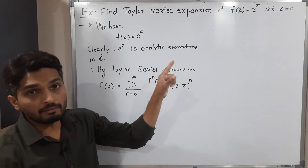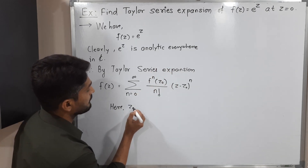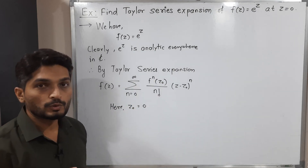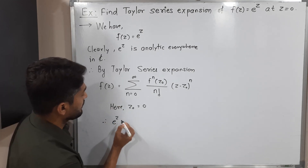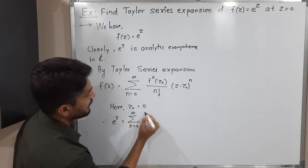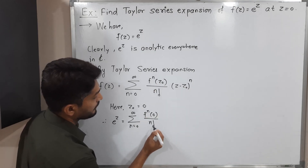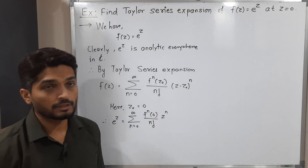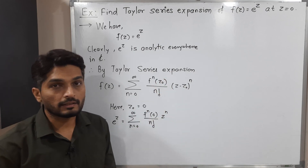The given point z₀ is 0, so in the Taylor series expansion we put z₀ = 0 everywhere. Our function f(z) = e^z becomes the summation from n = 0 to infinity of the nth derivative of f at 0, divided by n factorial, times (z − 0)^n, which is simply z^n. This is the Taylor series expansion at z = 0. Let us expand it to get a clear picture.